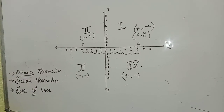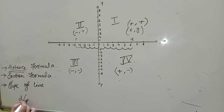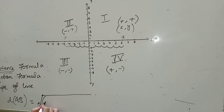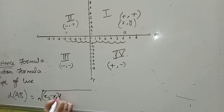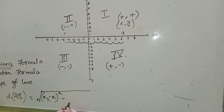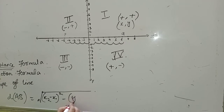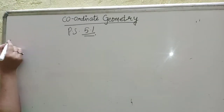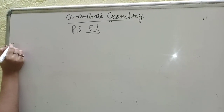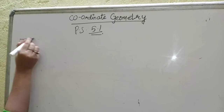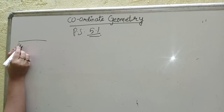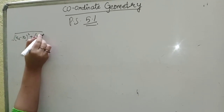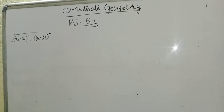The formula to find the distance between points A and B is: the square root of (x2 minus x1) whole squared plus (y2 minus y1) whole squared. Here we write the distance formula as: √[(x2 − x1)² + (y2 − y1)²].